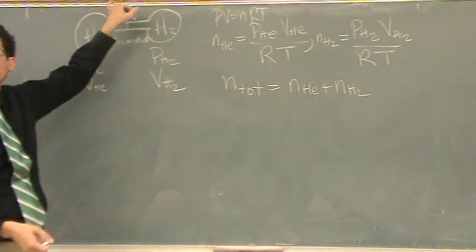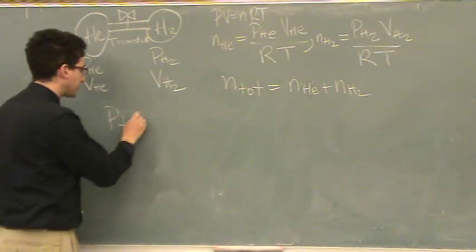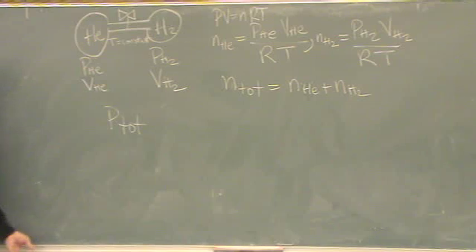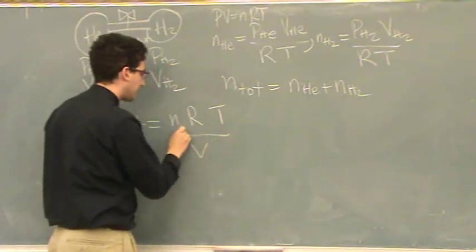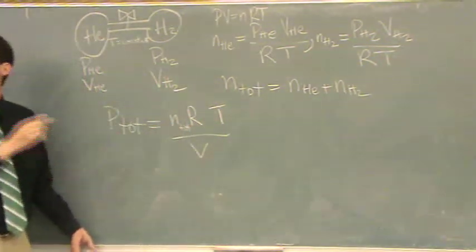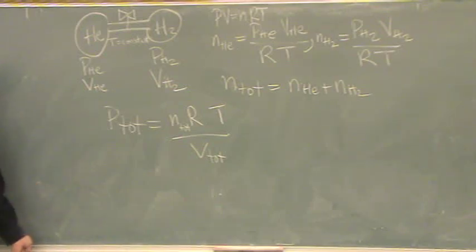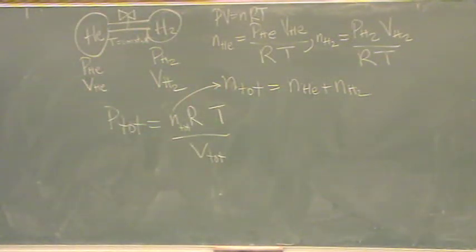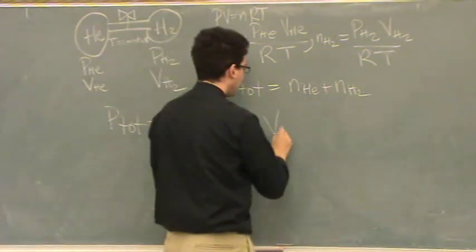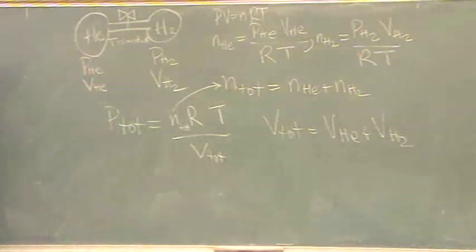So now what I'm doing is I'm pretending we open the valve, and it's free-flowing back and forth. So now, what the question asks me, what's the total pressure? Well, I could just use the ideal gas law, NRT over V. That's the total moles to find the total pressure. And I need the total volume to find the total pressure. Well, total moles, I found that a little bit earlier. R is a constant, T is a constant in this problem. V total, the volume, is just the volume of helium plus the volume of hydrogen.